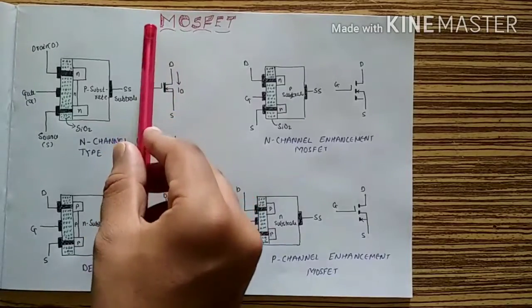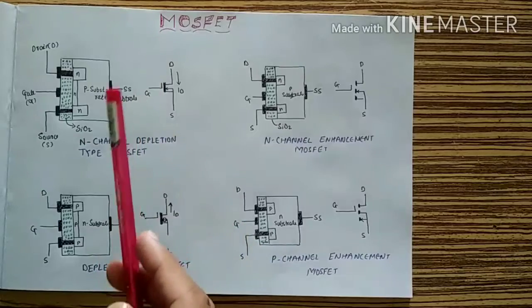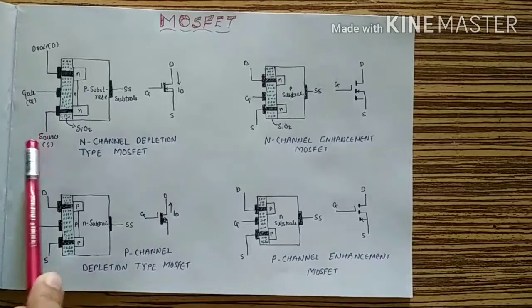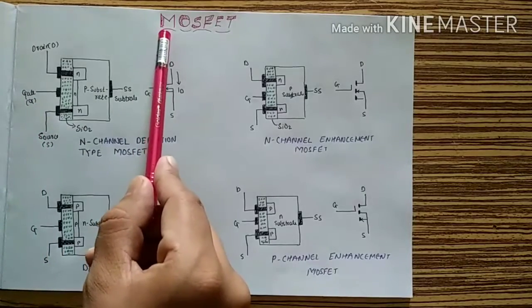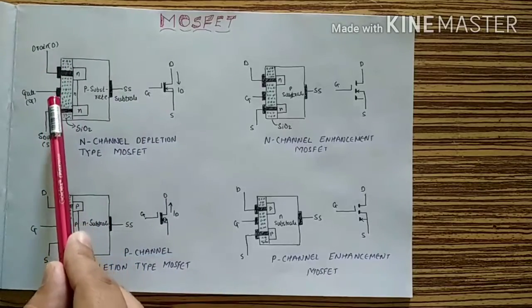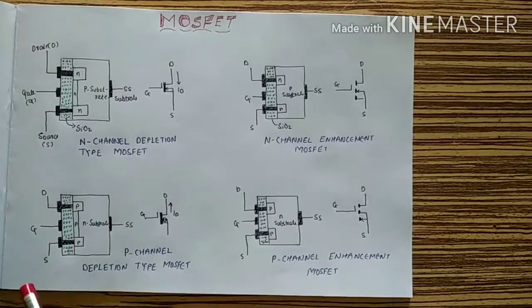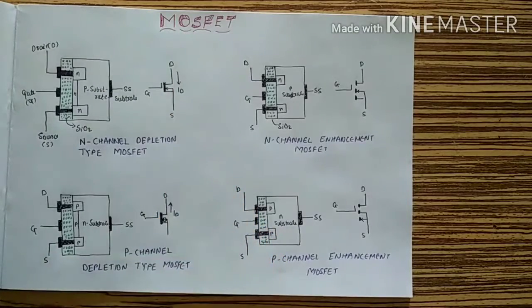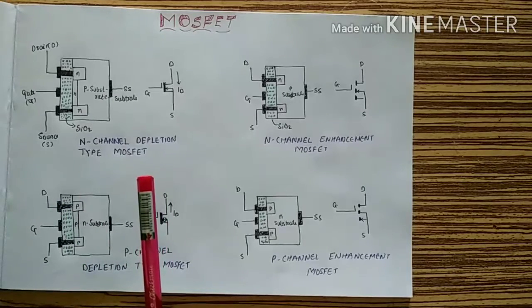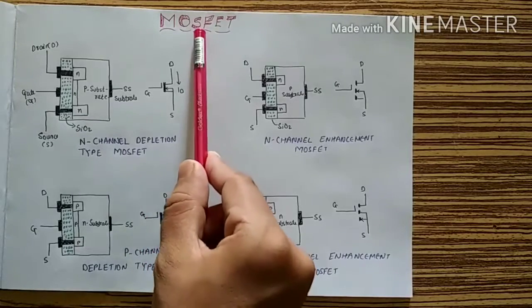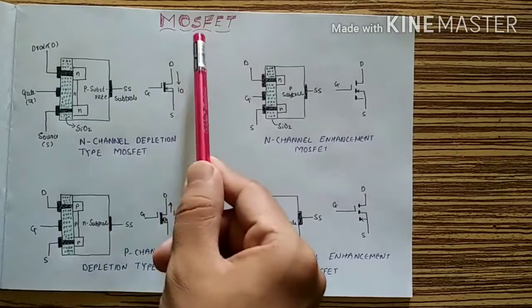In MOSFET, M stands for metal — it is a metallic contact used for drain, gate, and source. Oxide means it is an insulating layer, normally used as SiO2, silicon dioxide. And S is semiconductor, which may be N-type or P-type.